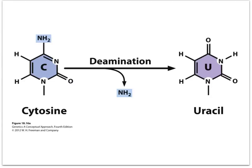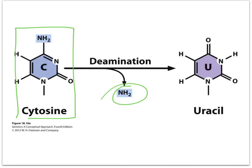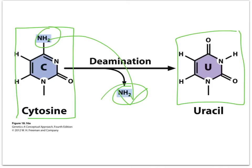This is just an example of what deamination is — removing the amino group and nitrogen group from a base. Here we have cytosine, normal old cytosine. If you remove this nitrogen group here, what does it turn into? Uracil. So it would be really easy for a cytosine to be deaminated, or have a spontaneous chemical change, and become uracil.